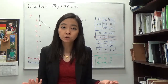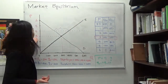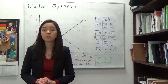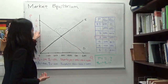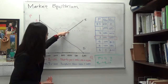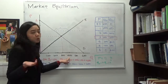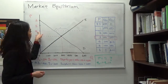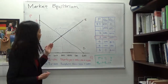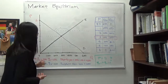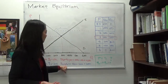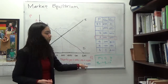Now what happens if the price is higher than equilibrium price? Suppose the price is four dollars instead. When your price is four dollars, quantity supplied is not equal to quantity demanded, meaning your market is not cleared. You look at your supply curve — quantity supplied is 400. You look at your demand curve — quantity demanded is 200. When the price is higher than equilibrium price, quantity supplied is higher than quantity demanded, so we say we have a surplus. The surplus is equal to 400 minus 200, which gives you a surplus of 200.